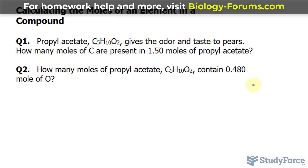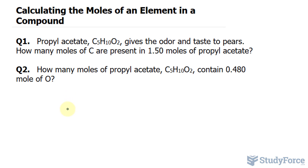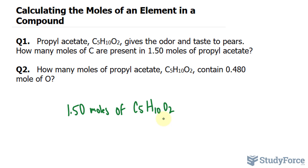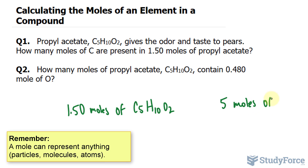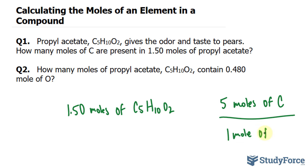How many moles of carbon are present in 1.50 moles of propyl acetate? This is actually a very basic chemistry problem. We are told that we have 1.50 moles of C5H10O2. And within C5H10O2, there are 5 atoms of carbon. So I'll write down 5 moles of carbon per every 1 mole of the molecule C5H10O2.